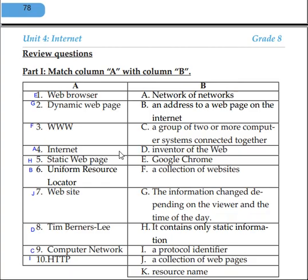A web browser is used to access the internet. Examples of web browsers include Google Chrome, Opera, Firefox, and Microsoft Edge. Google Chrome is a collection of websites. Key terms include: internet — a network of networks; a static web page — one that contains only static information; and a URL (Uniform Resource Locator) — an address to a web page on the internet.